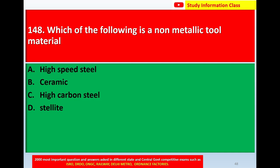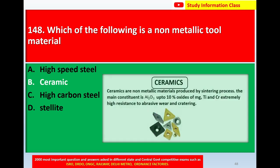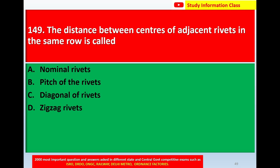For question number 147, particles of soft materials getting clogged in the grinding wheel is called loading — correct answer is Option A. Question number 148: Which of the following is a non-metallic tool material? Option A: high-speed steel, Option B: ceramic, Option C: carbon steel, Option D: stellites. The correct answer is ceramic. Ceramics are non-metallic materials produced by a synthesizing process; the main constituent is Al₂O₃ with up to 10% oxides of Mg, Ti, and Si. They have extremely high resistance to abrasive wear and cratering.